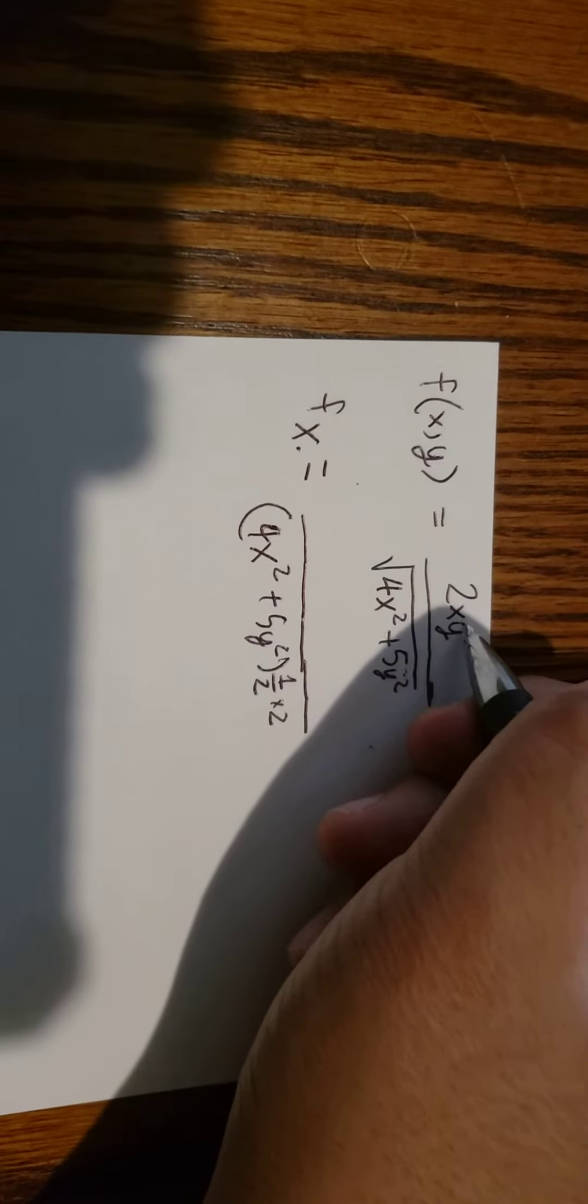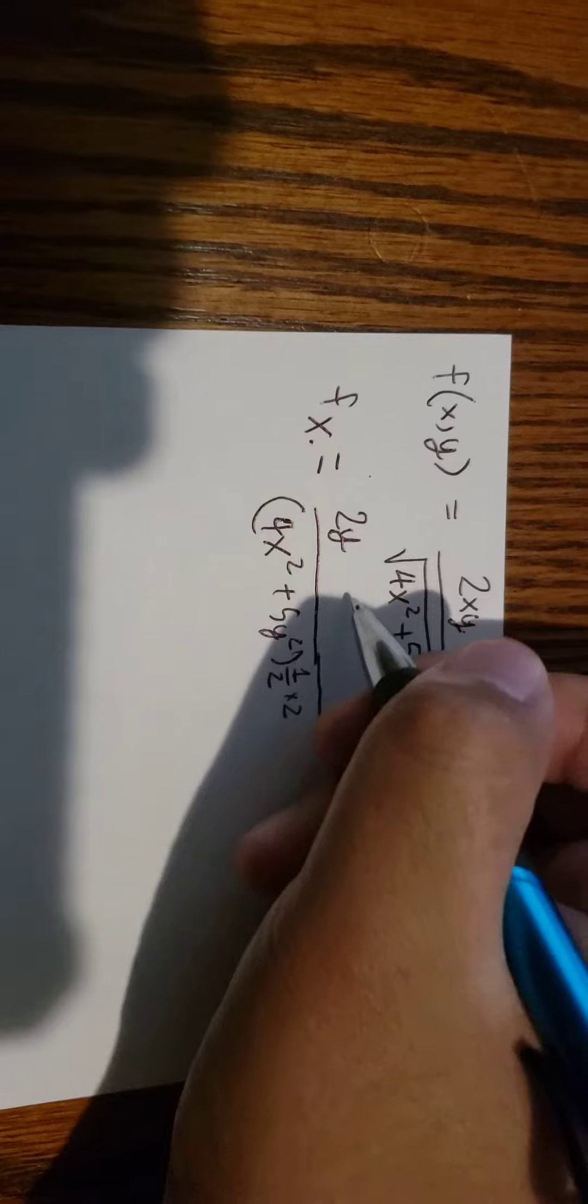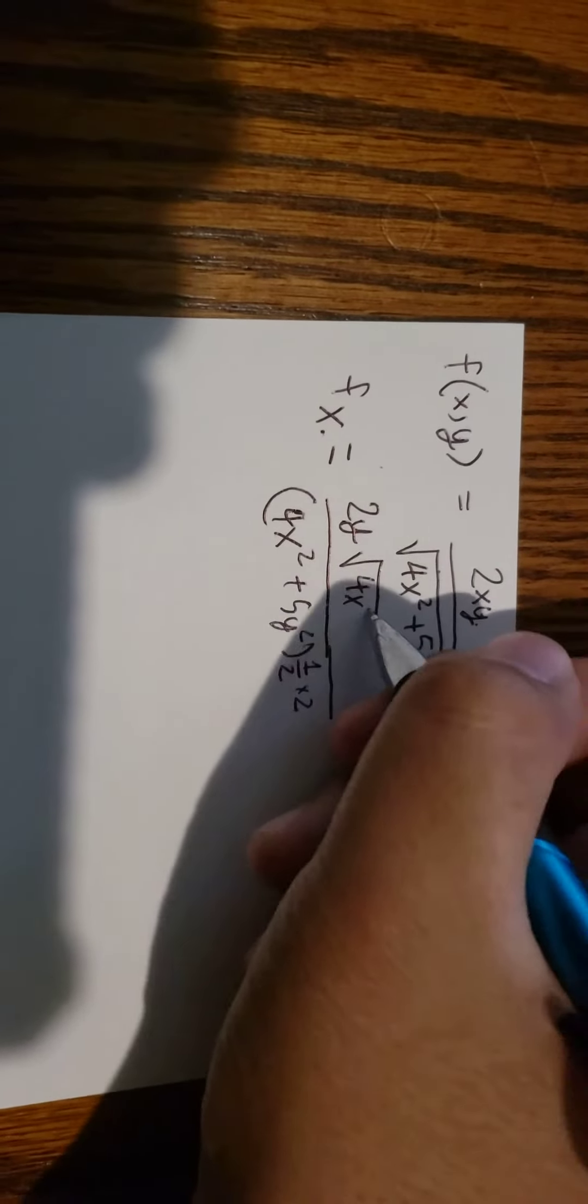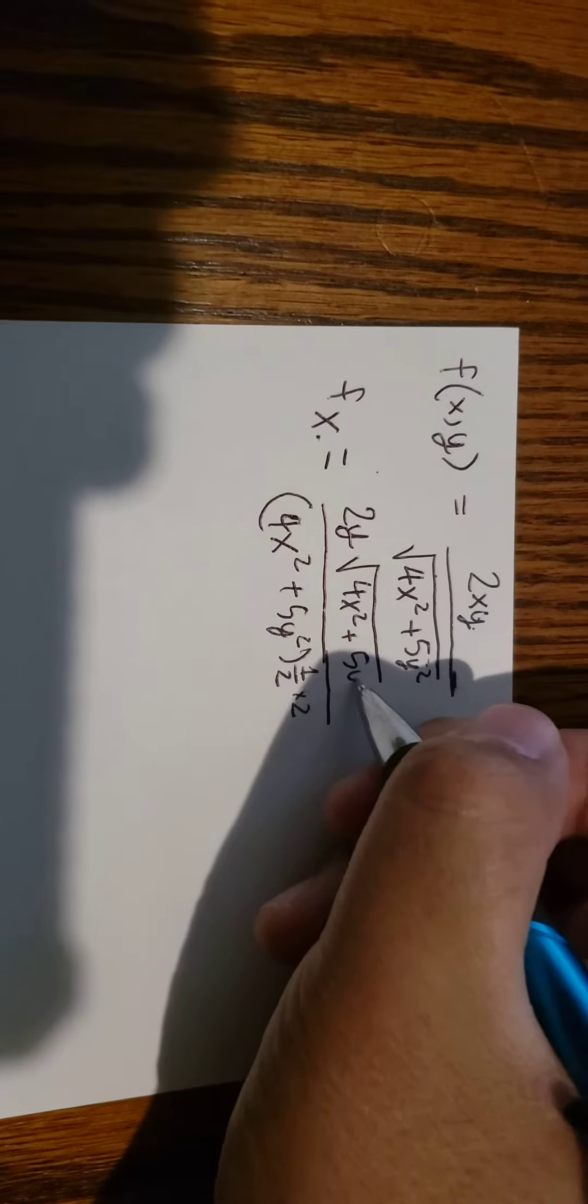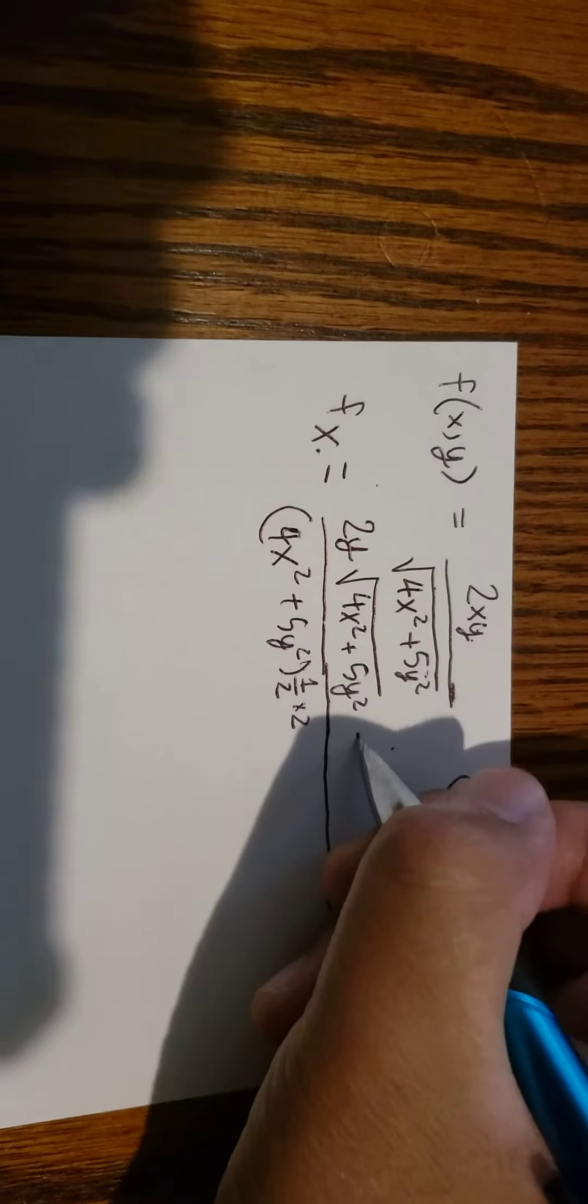So we do first derivative of 2xy. You get 2y. Multiply with this one, minus.